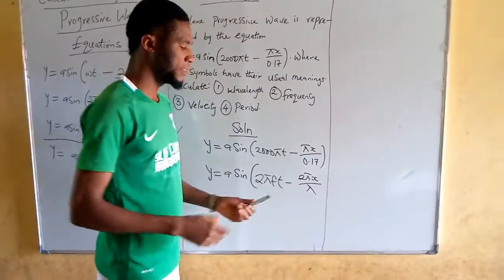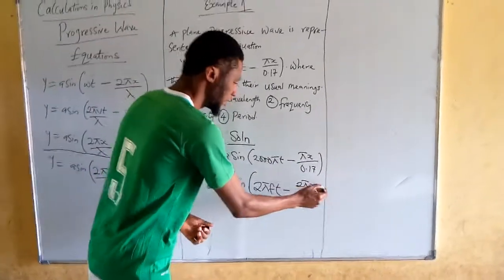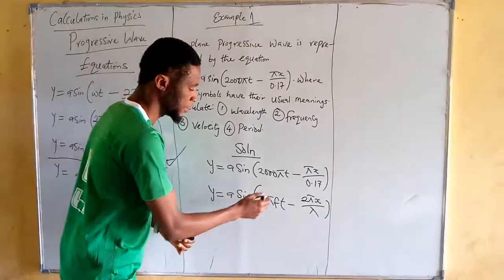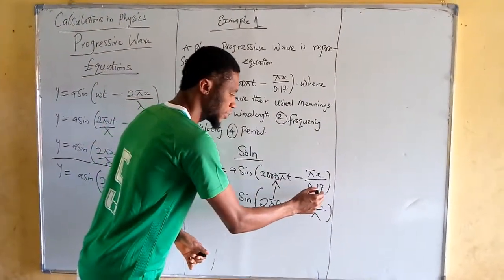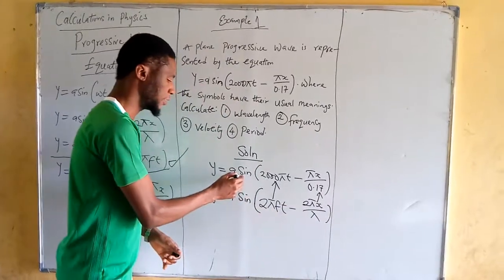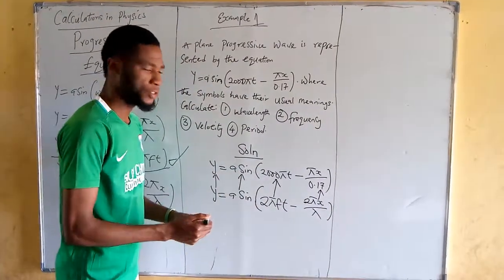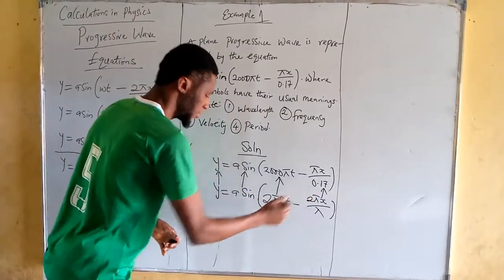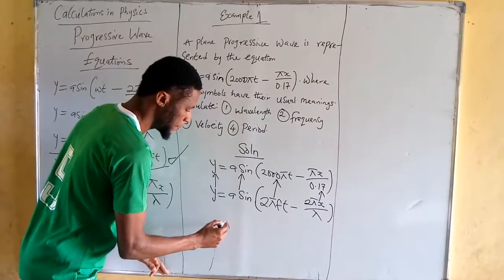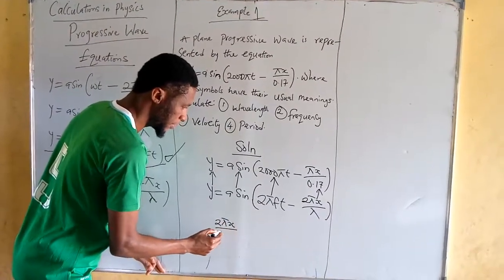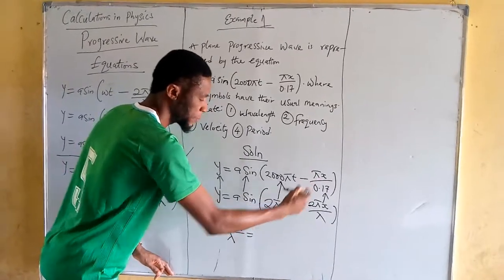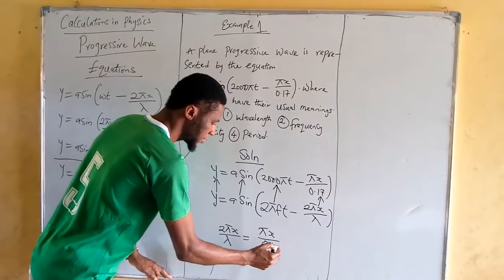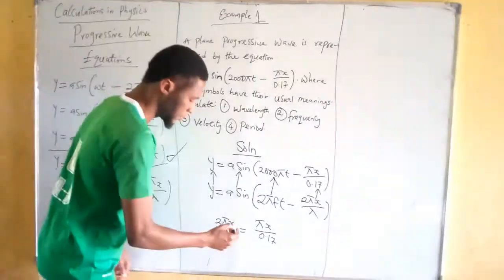We are going to match the two equations to each other, because each part has its own corresponding meaning. This term corresponds with this, while this corresponds with this, and so on. First, they say we should calculate the wavelength. So 2πx over wavelength corresponds with πx over 0.17.